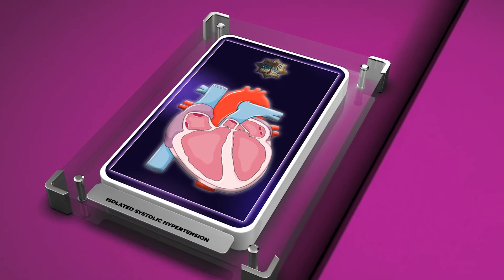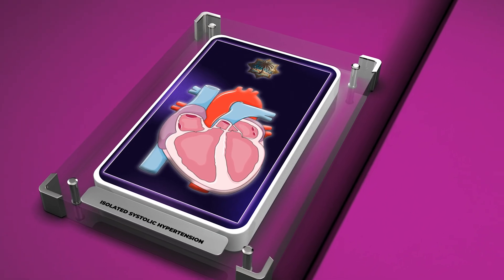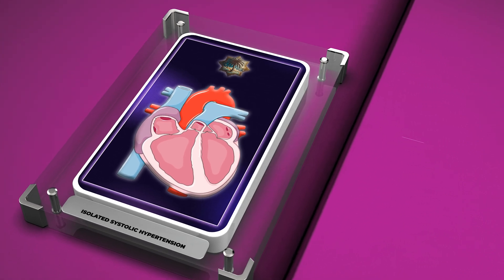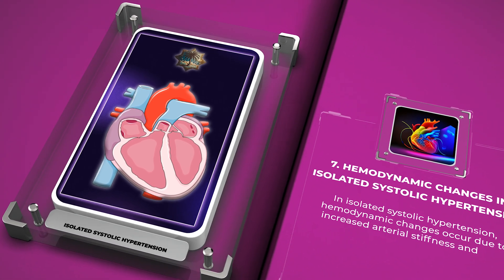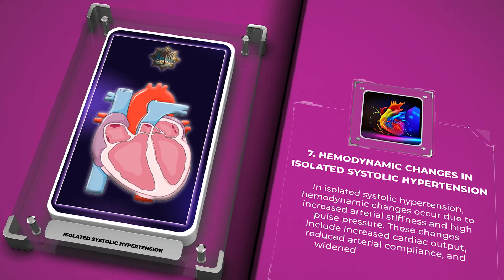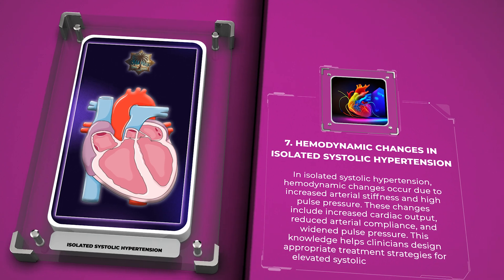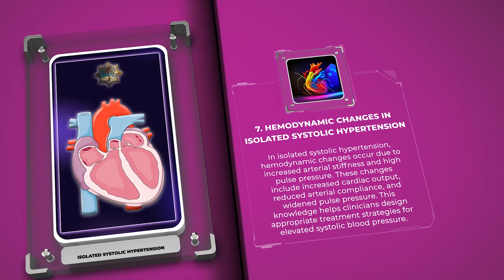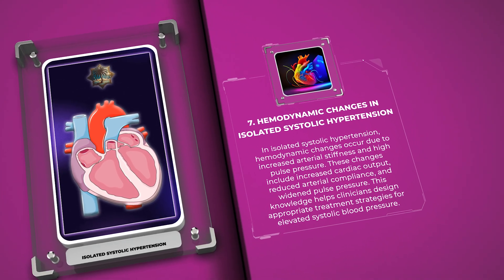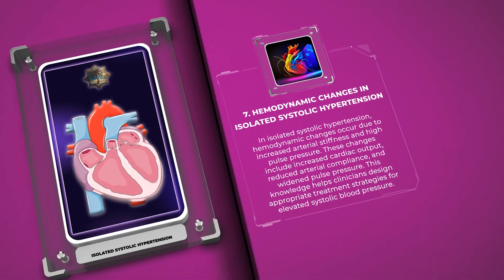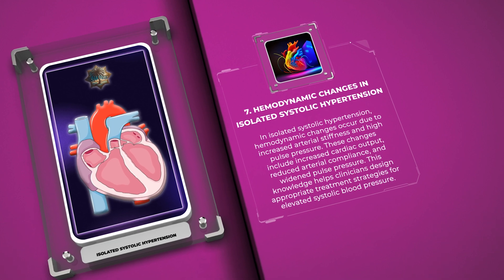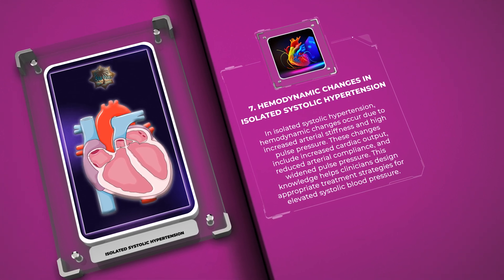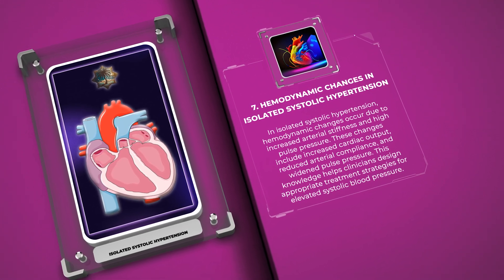In isolated systolic hypertension, hemodynamic changes occur due to increased arterial stiffness and high pulse pressure. These changes include increased cardiac output, reduced arterial compliance, and widened pulse pressure. This knowledge helps clinicians design appropriate treatment strategies for elevated systolic blood pressure.